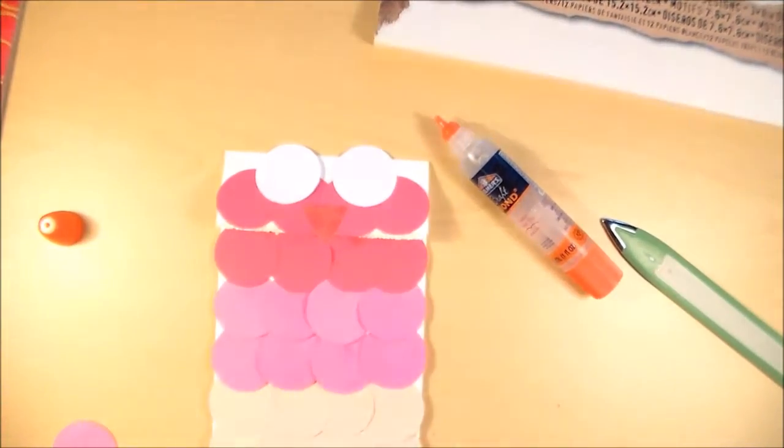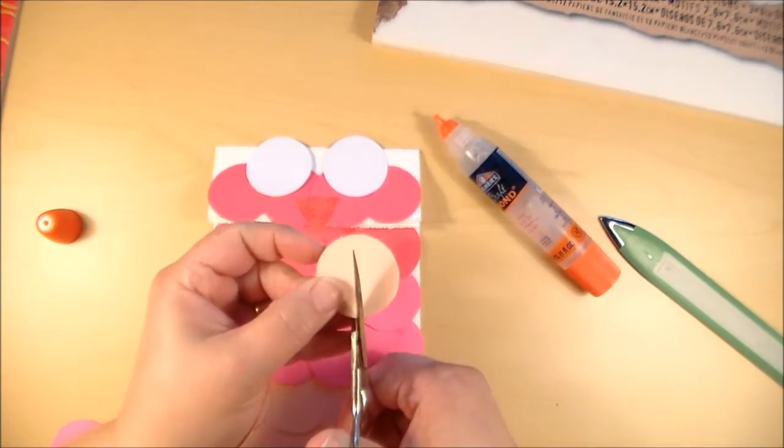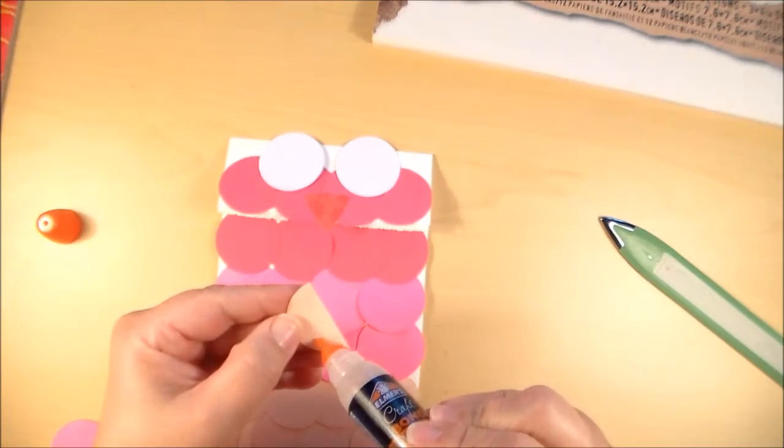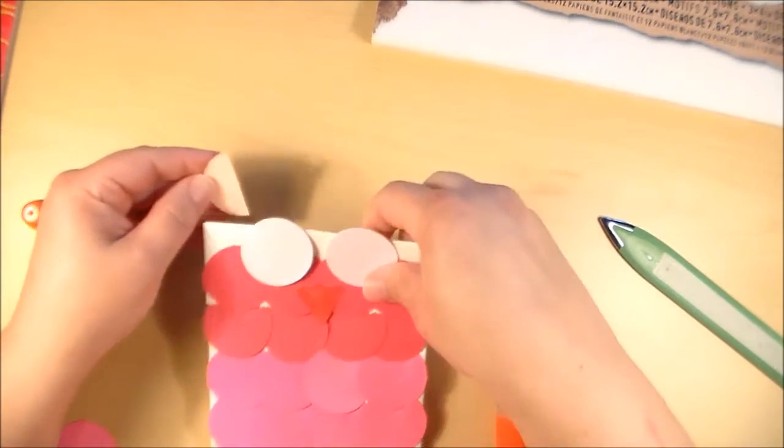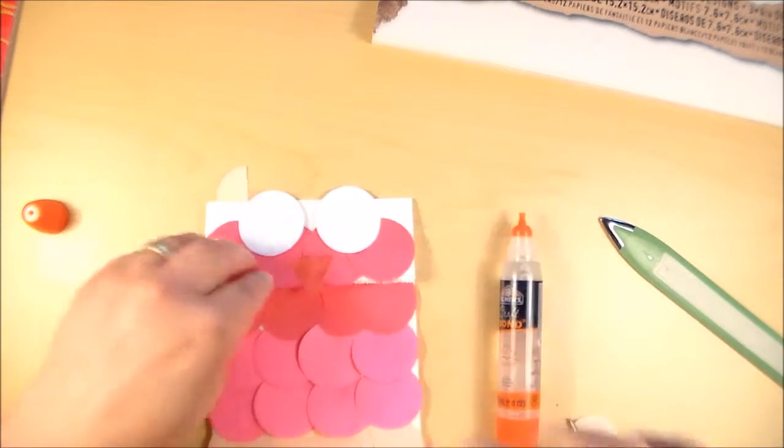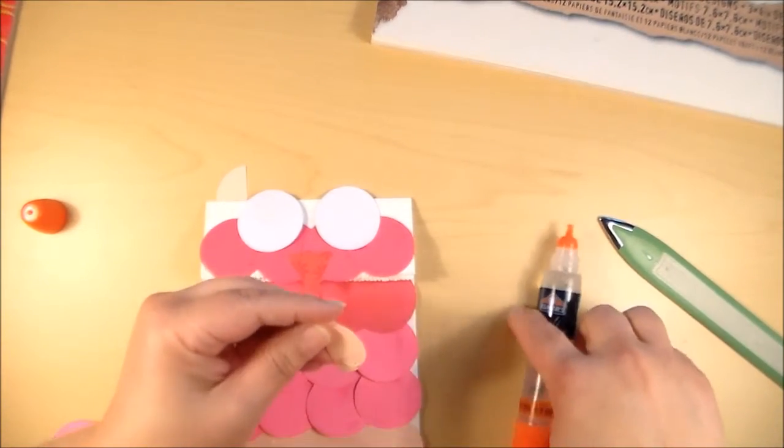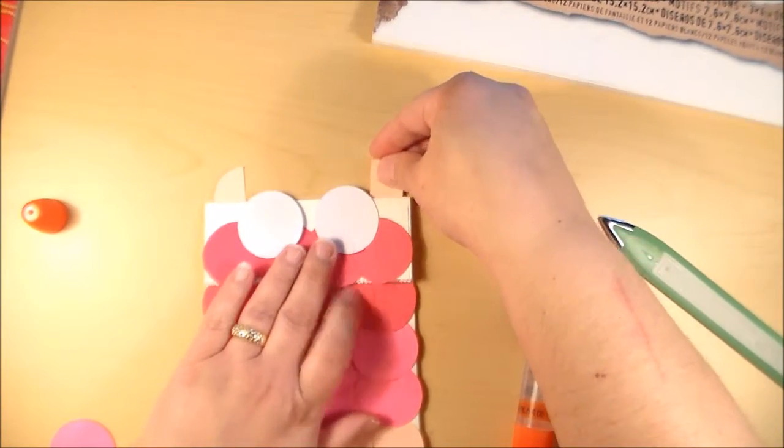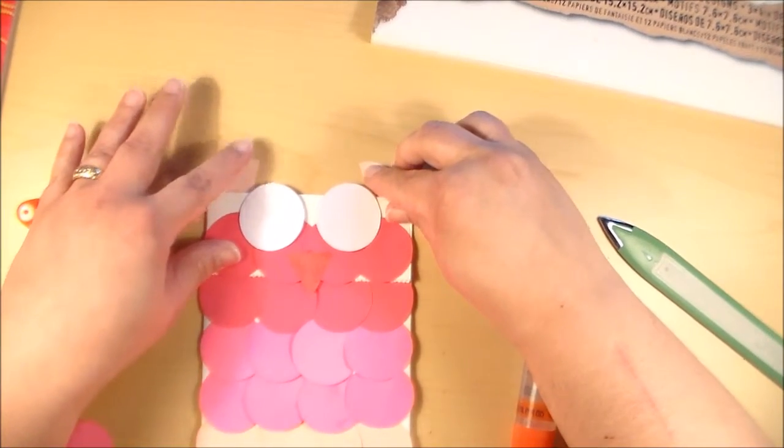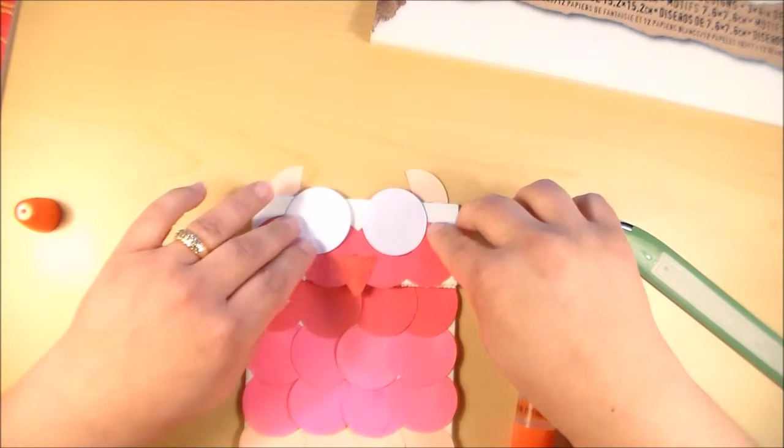Okie dokie. And we're going to take one of our circles, and cut it in half. And some glue. And some more glue. I like to point them at the bottom. I'm going to put them in just a little bit so they don't look quite so square.